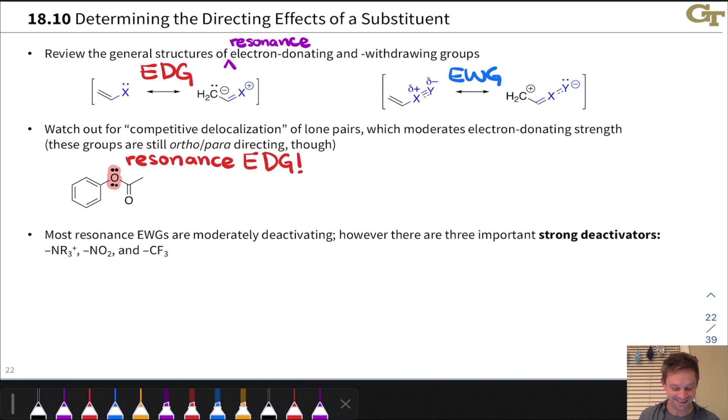This group should be ortho-para directing regardless of what's on the other side from the aromatic ring—what are the other bonds to the oxygen, right? Whether it's H, an alkyl group, a carbonyl, this is still electron-donating. And that holds true. This is a donating group, and it's an ortho-para director.